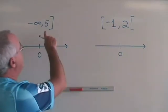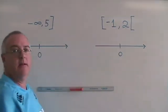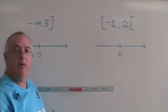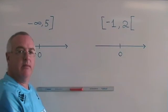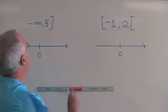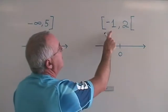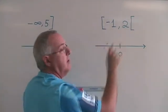Here we have been given two regions from the x-axis that are defined for us in interval notation, and we need to translate this into set builder notation. We have from negative infinity to 5 included, and we have from negative 1 included to positive 2 not included.